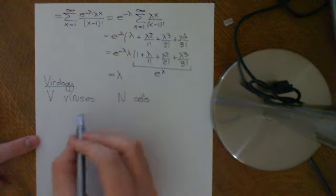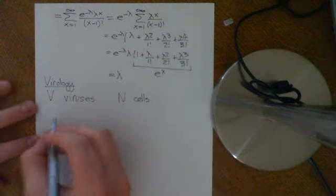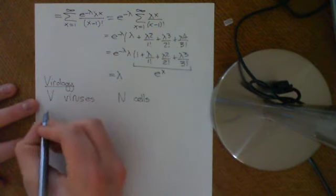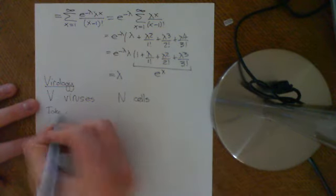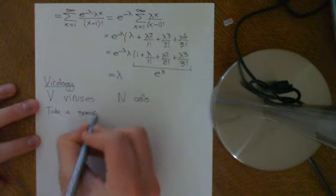We have V viruses and we have N cells. And we want to know the problem. We take a cell, so we take a specific cell.